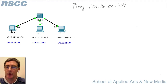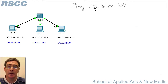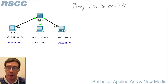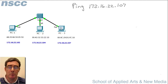Let's suppose we're on PC1 and we have a command window up, and we type ping 172.16.22.107. We want to send an echo request, or a ping packet, to PC3. When it gets the packet, it'll respond with the same information it was sent. Ping is used mostly to find out if a workstation is active and operating properly.